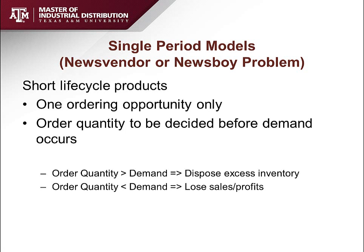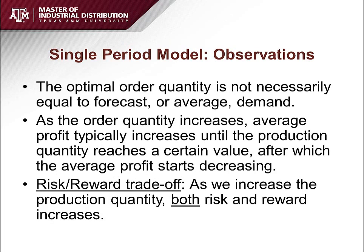The next model is called the single-period model, motivated by the newsvendor situation. A newsboy must buy newspapers in the morning and sell throughout the day. If he purchases more than enough, he disposes of excess inventory for a fraction of the original cost. If he buys less than demand, he loses the opportunity to make more profit. The newsvendor problem looks at buying an item with a very short life cycle and finding the optimal order quantity for that item.